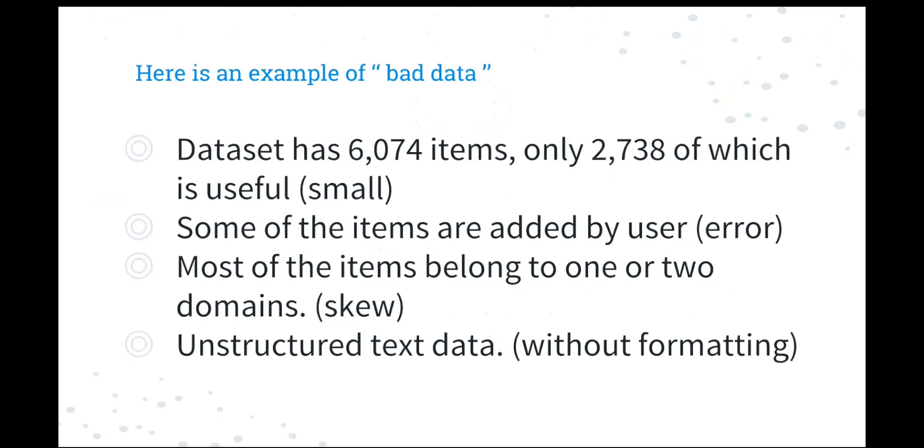Here is an example of the bad data. The data set has 6,000 items and only 2,700 of which is useful. It means the data set is small. Some of the items are added by the user and there must be some errors inside. Most of the items belong to one or two domains, which means this data set is extremely skewed. And they are all in unstructured text data and this is without formatting. So this is our data, so how to deal with it.